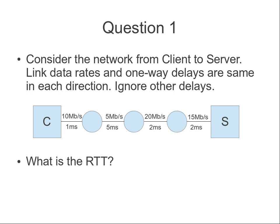Here's a network with routers between the client and server. The links have some characteristics — a data rate and some delay. Note that this is the one-way delay and the links have the same characteristics in both directions. What's the round trip time from client to server? Easy to get started — try and work it out in your head first.